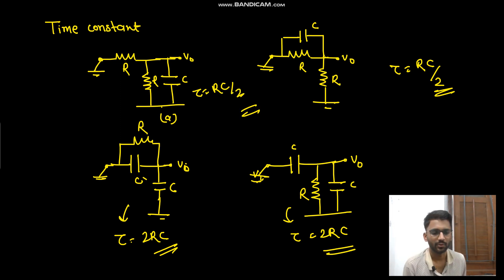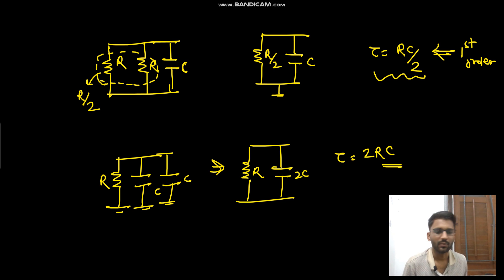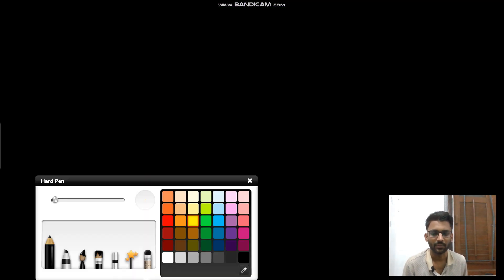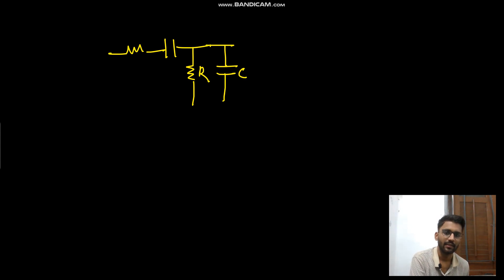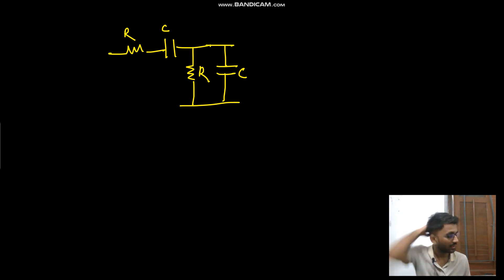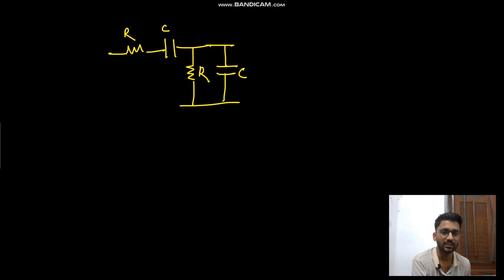I hope you've understood the concept of time constant. Let's take one more example to get a better understanding. This is R, this is C, this is R, and this is C. Now you tell me: what is the time constant, or what is the order of this circuit? This is a second-order circuit.